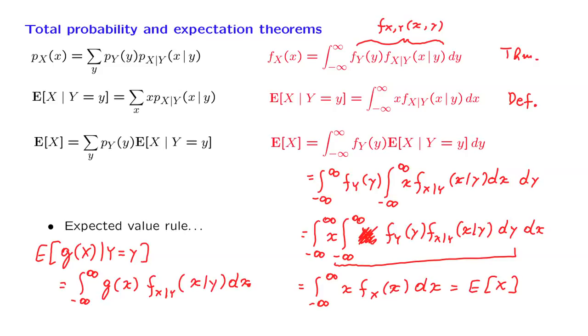And there are many other versions of the expected value rule. Any version that we have seen for the discrete case has also a continuous analog, which looks about the same, except that we integrate and that we use densities.